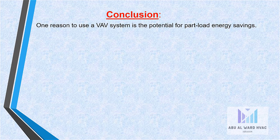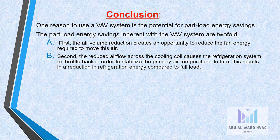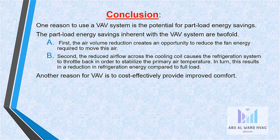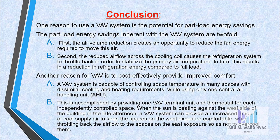One reason to use a VAV system is the potential for part load energy savings, which are twofold. First, the air volume reduction creates an opportunity to reduce the fan energy required to move air. Second, the reduced air flow across the cooling coil causes the refrigeration system to throttle back to stabilize the primary air temperature, resulting in a reduction in refrigeration energy compared to full load. Another reason is to cost-effectively provide improved comfort — a VAV system is capable of controlling space temperature in many spaces with dissimilar cooling and heating requirements while using only one central air handling unit.